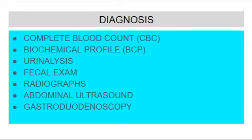Diagnostic methods: A CBC may reveal anemia and a decreased lymphocyte count. The biochemical profile can show low protein levels, low calcium, and low cholesterol levels. A urinalysis can help in ruling out protein loss due to kidney disease. Ultrasound and endoscopy may be indicated if the previous diagnostics have been inconclusive.